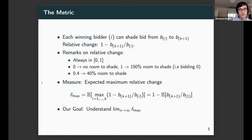We measure this quantity in the following way. Each bidder i can shade their bid from bi all the way down to b_{K+1}, and we take note of the relative change, which is 1 minus b_{K+1} over bi. If you take an example with three bidders and K equals 2, if they bid 7, 8, and 1, the first two bidders receive an item and pay 7, 8, but the relative change would be 1 minus 1/7 and 1 minus 1/8 respectively. This denotes the percentage they can shade from their original bid. Some remarks: it's always between 0 and 1, where 0 indicates no room to shade and 1 means you could have bid 0 and still received an item.